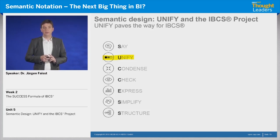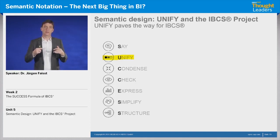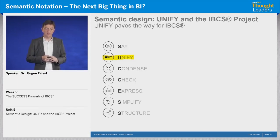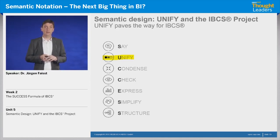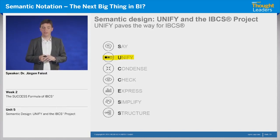Now that we've been through all those single rules of the unify step of our success formula, you've seen that the semantic design supports all the other steps of our success formula. That's the reason why we think semantic design is the missing link to an international business communication standard — a visual language that helps us convey our messages, just as standards in other disciplines help communicate within those disciplines. This is actually the main idea of Hichert and Feist and the main aspect of the International Business Communication Standards: adding semantic design to the other steps.